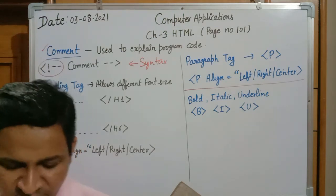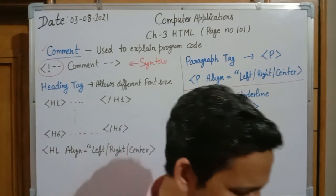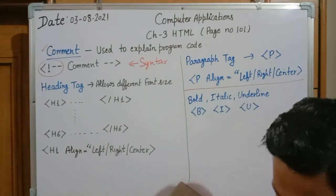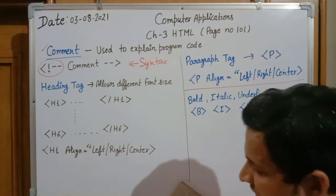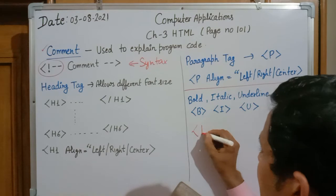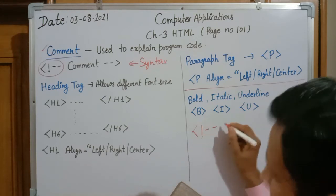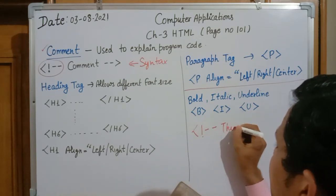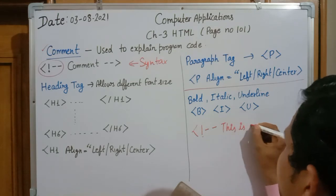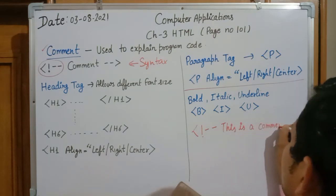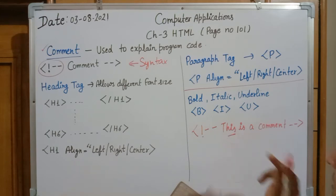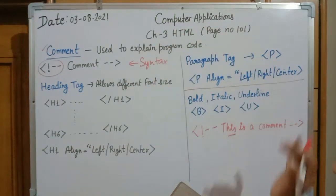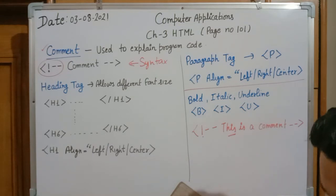Please open your book to page 101. Example number 7 is given. In this example, inside the HTML body tag they have written: <!-- this is a comment --> and <!-- this is a comment -->. This part is written in the program but it will not affect the output because it is marked as a comment section.